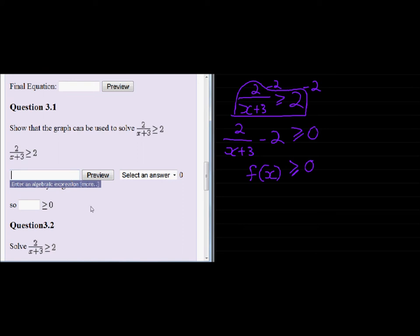Here they tell me to take everything to the left. So 2/(x+3), just put x+3 in brackets so it knows that's the whole denominator. Then we subtract 2 on both sides, so negative 2, and we want it greater or equal to 0. So we have f(x) ≥ 0.